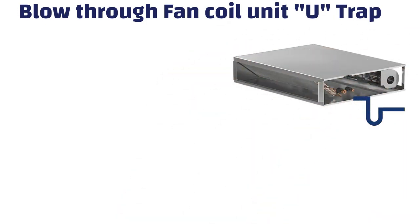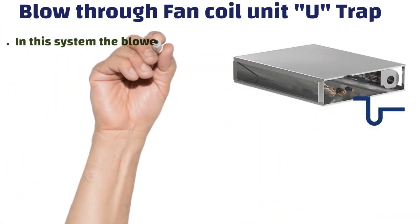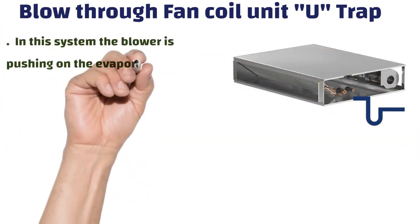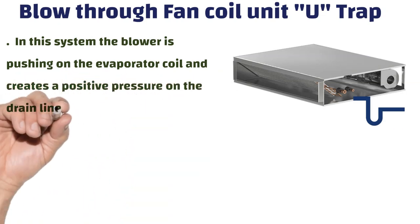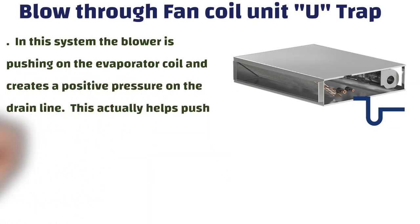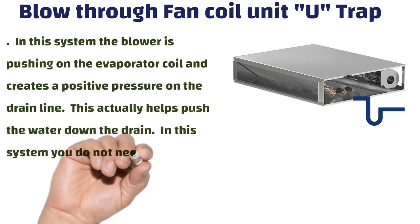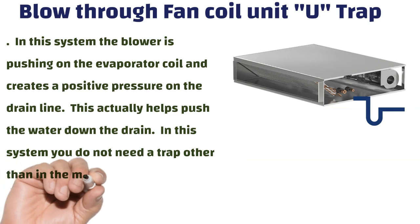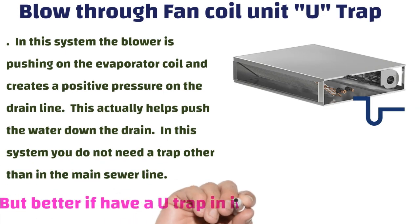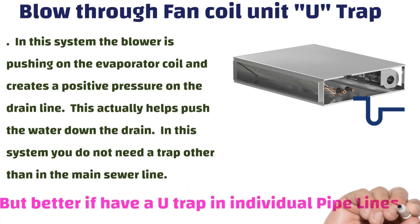U-trap at blow-through unit: in this system, the blower is pushing air onto the evaporator coil and creates a positive pressure on the drain line. This actually helps push the water down the drain. In this system, you do not need a trap other than in the main sewer line, but it is better to have a U-trap in individual pipelines as well.